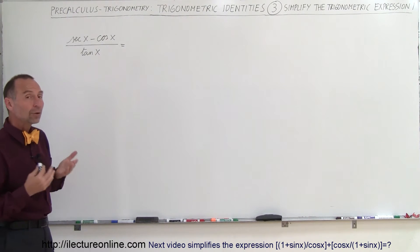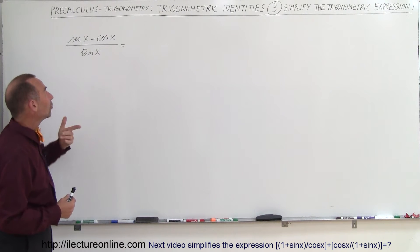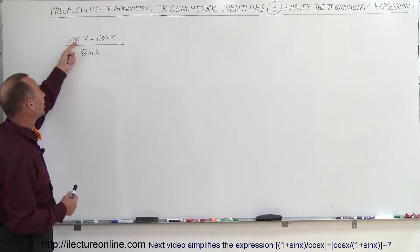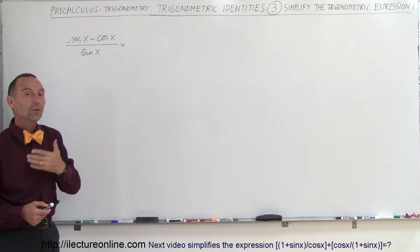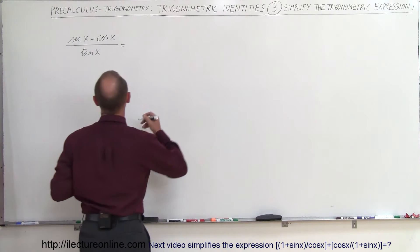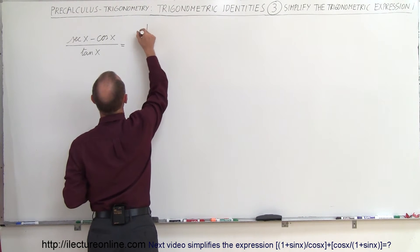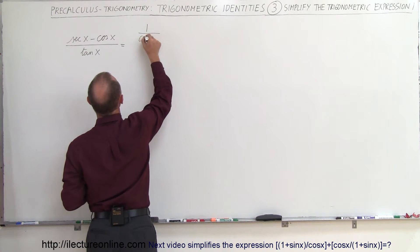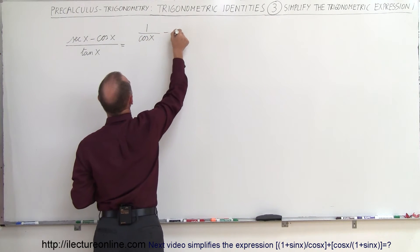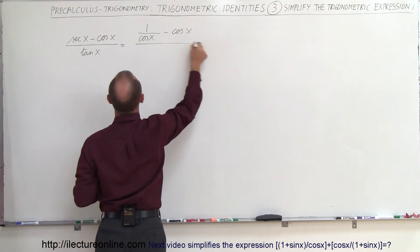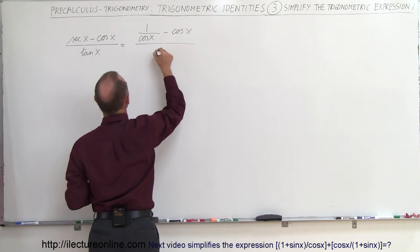So typically what you do when you get something like this and they ask you to simplify it is to rewrite something like the secant of x and the tangent of x into their equivalents. For example, the secant of x can be written as 1 over the cosine of x minus the cosine of x and the tangent of x can be written as the sine of x divided by the cosine of x.